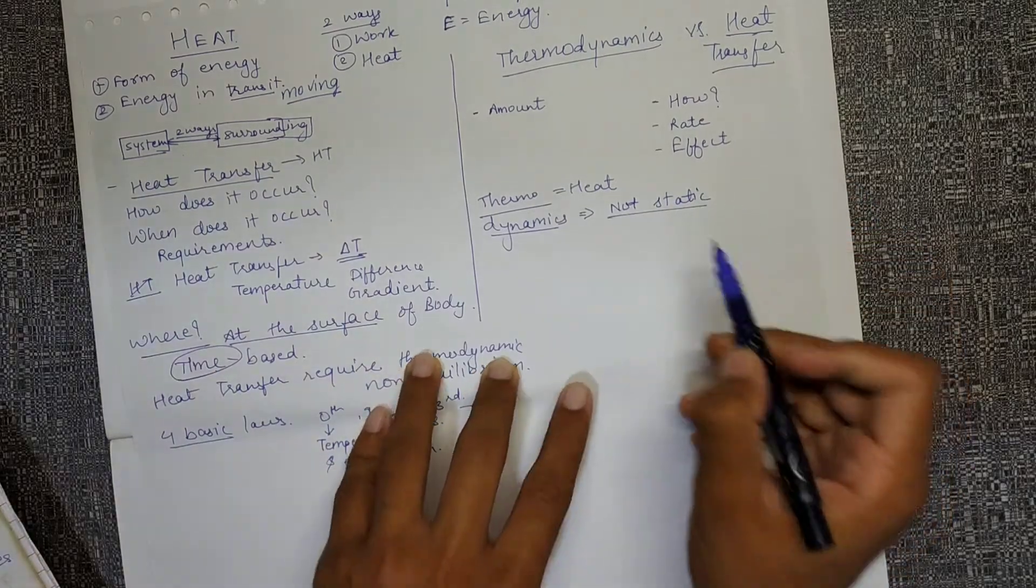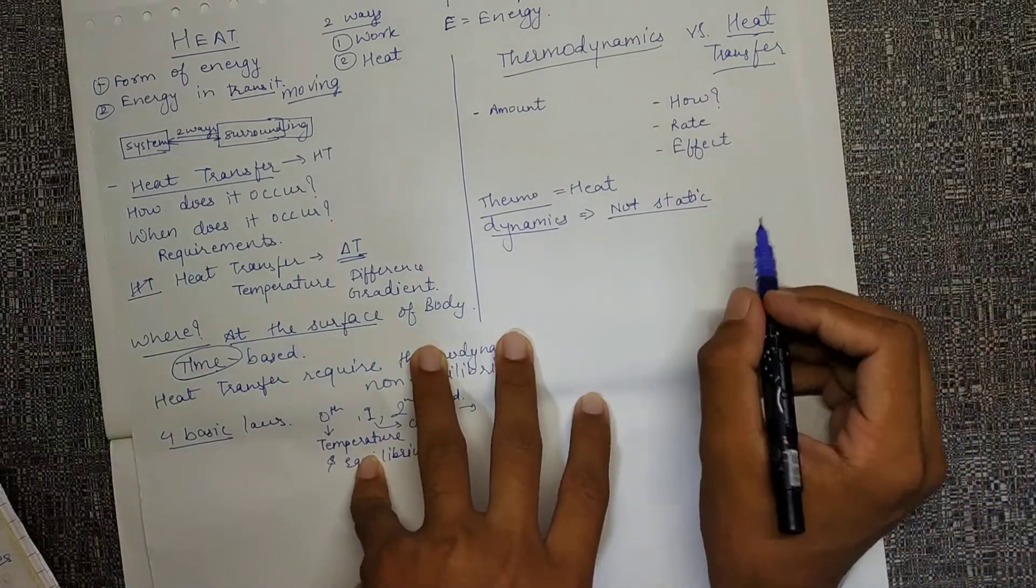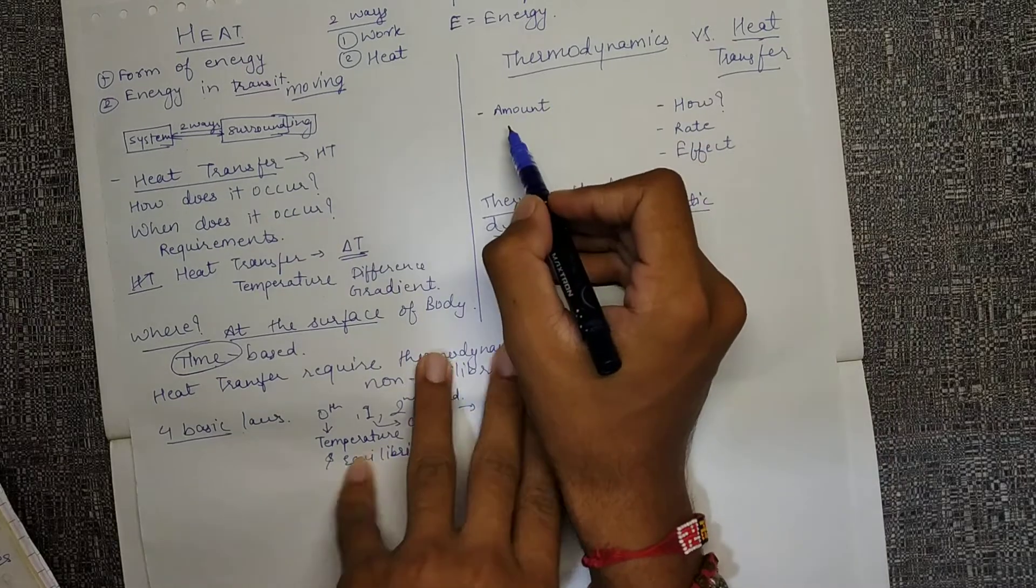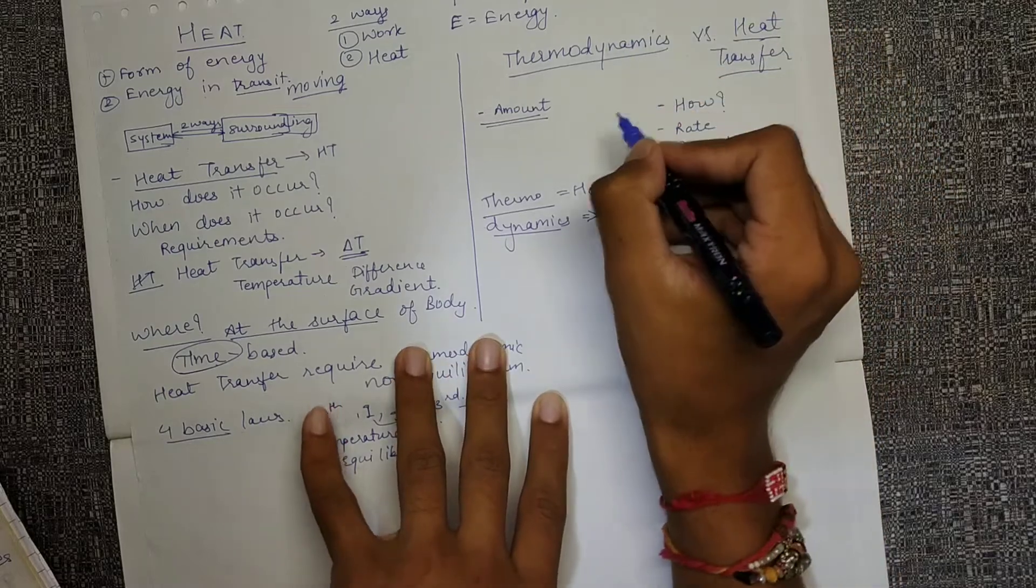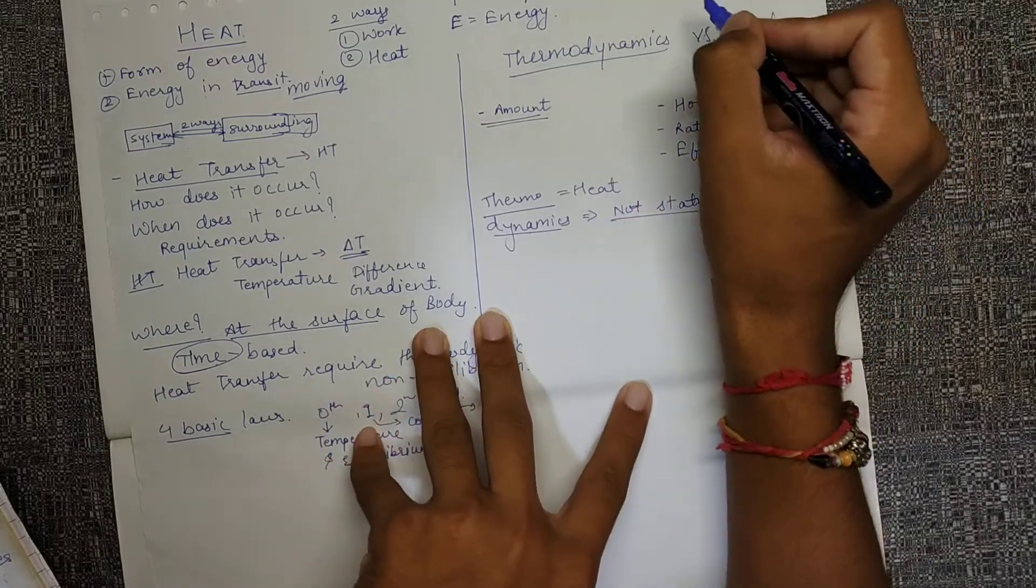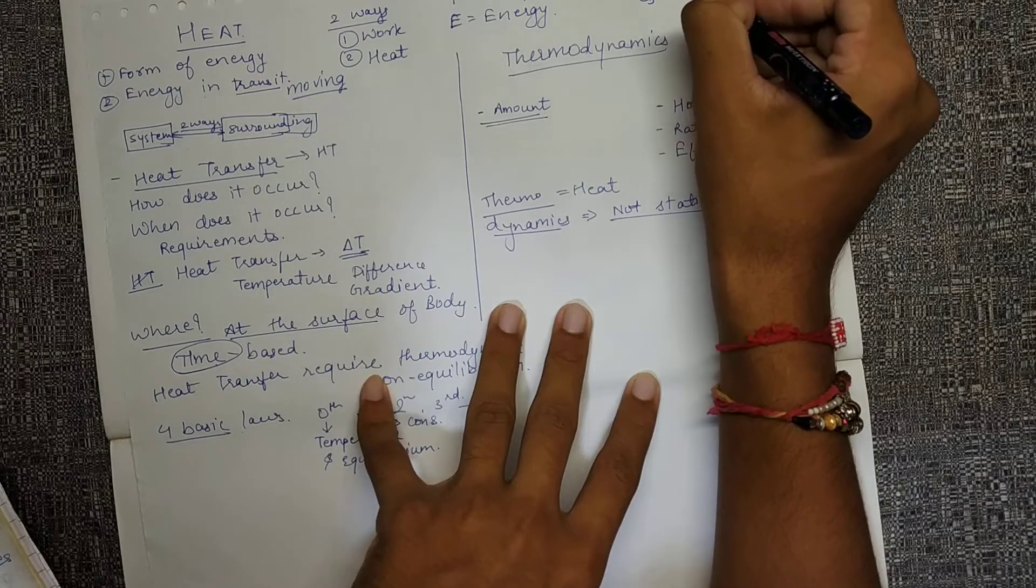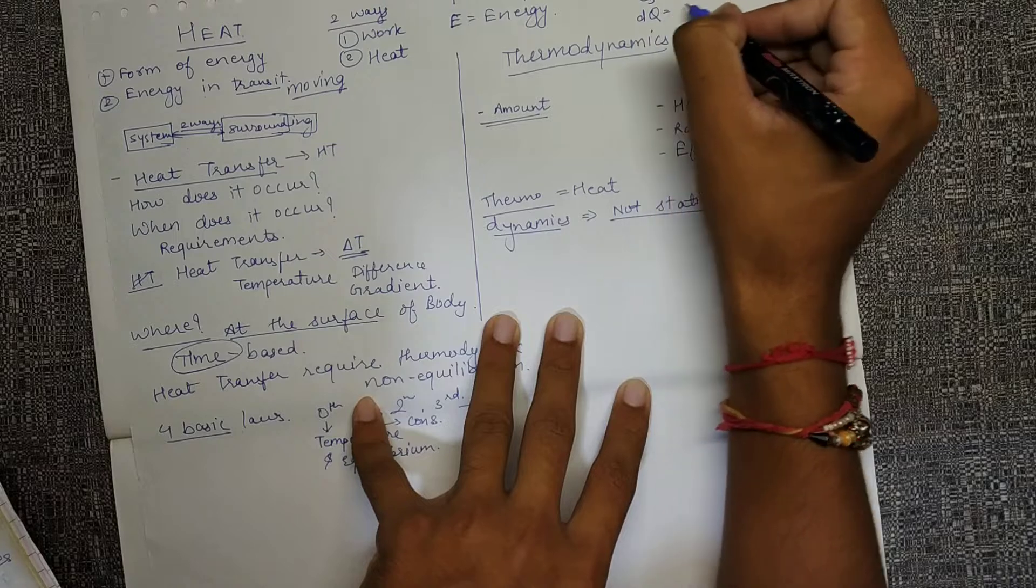Both of these may be confusing at times, but when we study thermodynamics, it involves only the amount of heat which is moving. Let's give the symbol for heat. Q is the symbol for heat, and if I write dQ, it's the differential amount of heat.